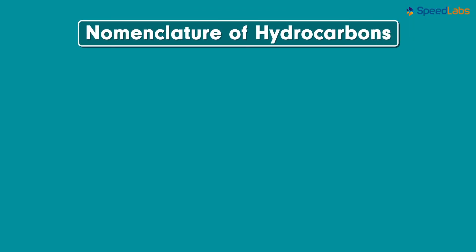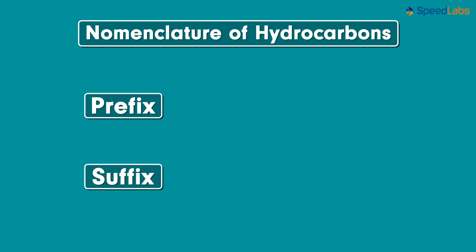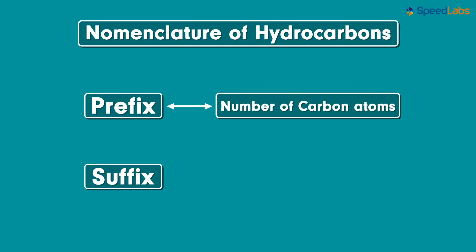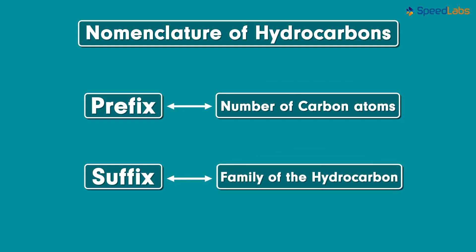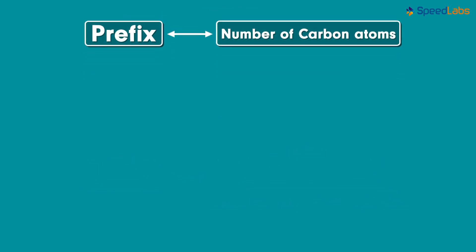The name of any hydrocarbon is divided into two parts: the prefix and the suffix. The prefix is decided by the number of carbon atoms, while the suffix is determined by the family of the hydrocarbon — that is, whether the compound belongs to the group of alkanes, alkenes, or alkynes.